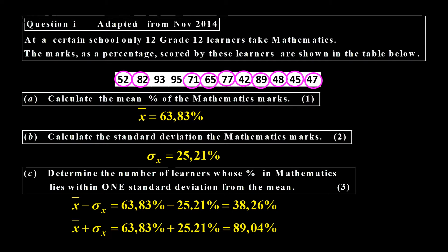And if we count the number of data points between 38.26 and 89.04, these are the values that we obtain. And if we count them, we see there are 10 learners who fall within one standard deviation.